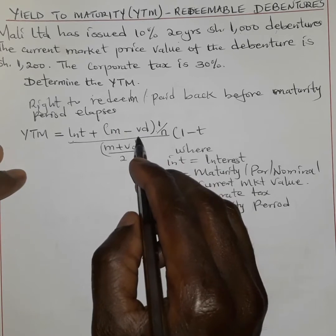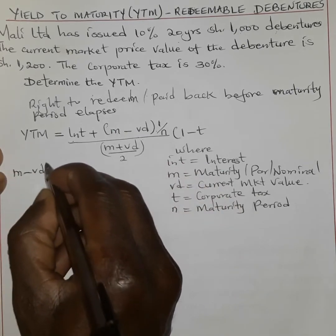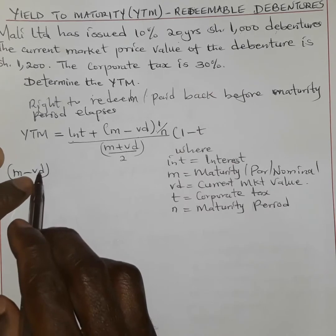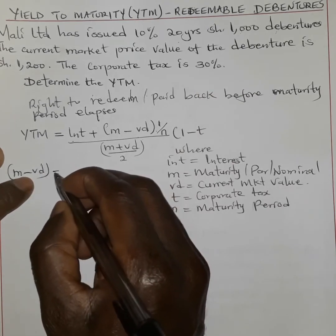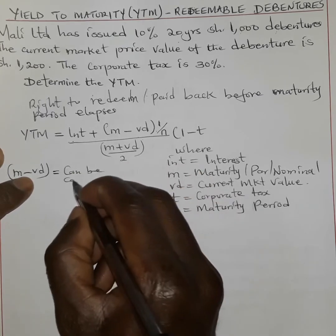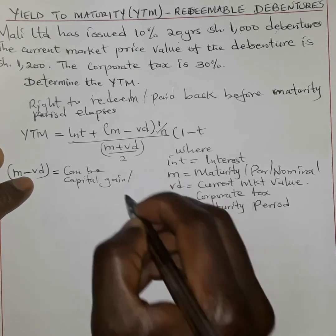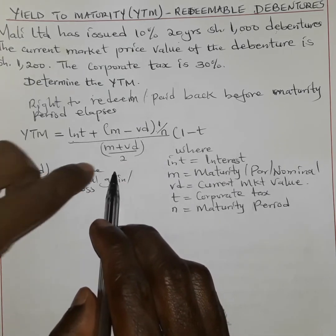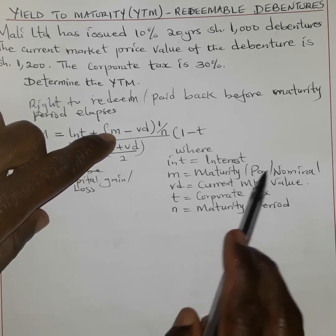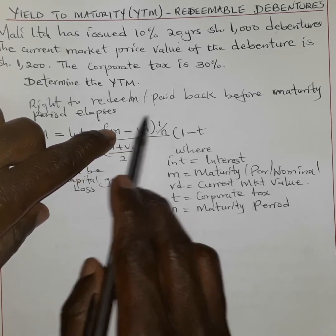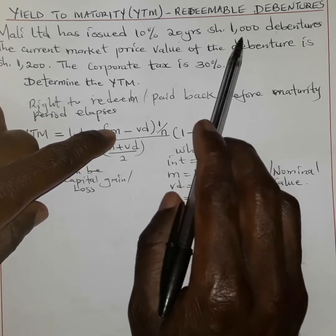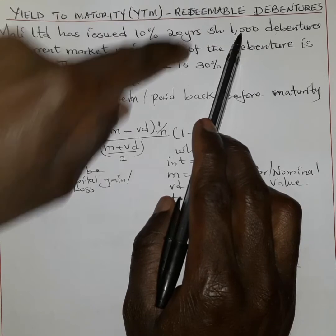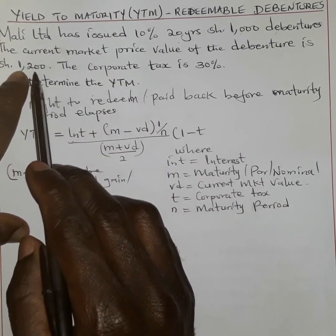To explain the components: M minus VD gives us the difference between the nominal value — which in this case is 1000 — minus the market value. This essentially refers to either a capital gain or a capital loss to the firm. It will be a capital gain if the firm issues the debenture whose nominal value is higher than what is trading in the market. In this case the par value is 1000, but the market value is 1200, so it was issued at a loss.